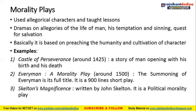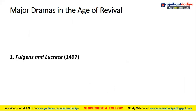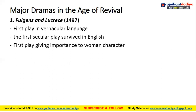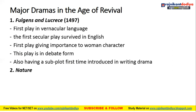Now for major dramas in the Age of Revival. The first important play is Fulgens and Lucrece, written around 1497. It is the first play in vernacular language and the first secular play to survive in English. It is also the first play to give importance to a woman character — the protagonist — and is written in debate form, also introducing a subplot for the first time in drama writing.